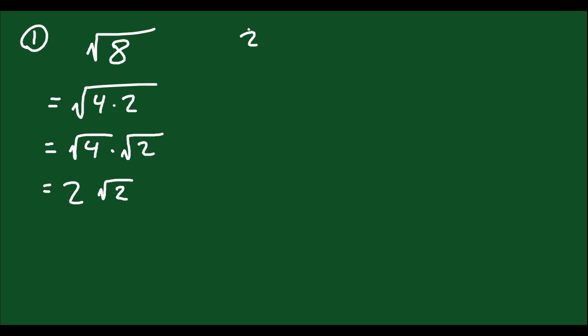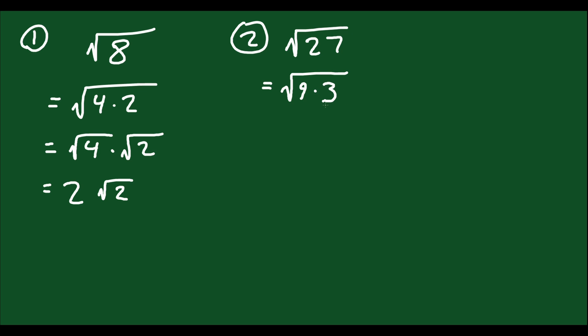You can only split radicals like this if the numbers are multiplied or divided — not if they're added or subtracted; that's completely different, similar to rules with exponents. Let's work on another one. If you have the square root of 27, think of 9 times 3. You write that as the square root of 9 times the square root of 3, which equals 3√3.